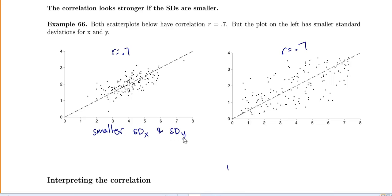So because the standard deviations are smaller it makes our correlation look like it's stronger even though it's really not.